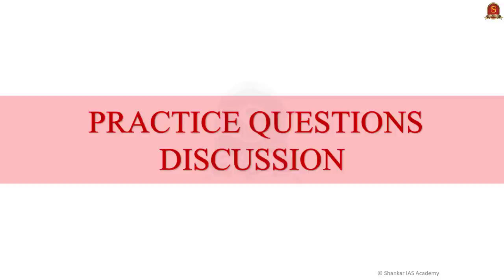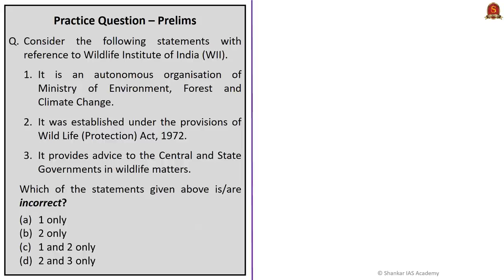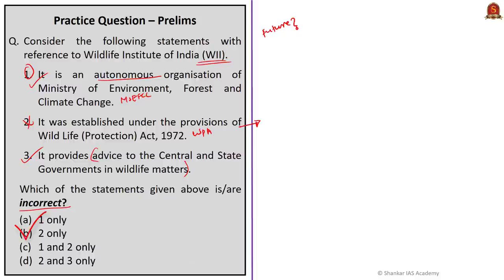Moving to practice questions. Consider the following statements with reference to the Wildlife Institute of India. Statement one: it is an autonomous organization of the Ministry of Environment, Forest and Climate Change — this is currently correct, but may become incorrect if autonomous status is removed. Statement two: it was established under provisions of the Wildlife Protection Act of 1972 — this is incorrect, as WII is not set up under WLPA 1972. Statement three: it provides advice to central and state governments in wildlife matters — correct. The answer is option B: two only.